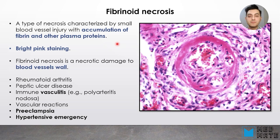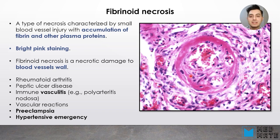Another example of necrosis is fibrinoid necrosis. This is the type of necrosis characterized by small blood vessel injury, happening when there is accumulation of fibrin or other plasma proteins, and it has a bright pink staining color. You can see a blood vessel with accumulation of fibrin around it in this slide. Fibrinoid necrosis is a necrotic damage to the blood vessel wall and can be due to rheumatoid arthritis, peptic ulcer disease, immune vasculitis, preeclampsia — which is hypertension due to pregnancy — or hypertensive emergency, when severe hypertension causes damage to tissues.